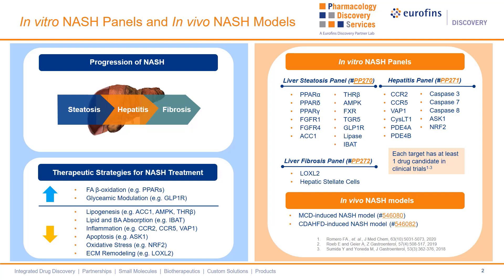We have developed three in vitro NASH panels based on NASH disease progression, from mild steatosis to severe liver fibrosis. A total of 25 core therapeutic targets, highly contributing to liver steatosis, hepatitis, and liver fibrosis, were selected. Every selected target has at least one drug candidate in clinical trials for NASH indication. Eurofins Discovery provides well-validated in vitro target-based and phenotype-based assays across NASH progressions. Our partner lab PDS also provides two validated in vivo NASH models, including methionine-choline-deficient-induced and choline-deficient amino acid-defined high-fat diet-induced models. Compounds assessed from in vitro studies can be directly followed up with in vivo efficacy evaluation.